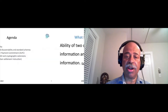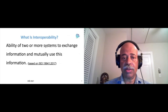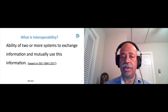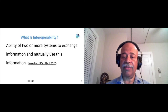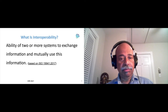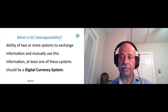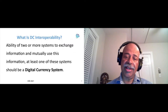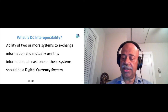I go into interoperability. I just wanted to get a one-sentence answer to this: interoperability is the ability of two or more systems to exchange information and mutually use that information. It's based on ISO 19941:2017. In this talk, I'm specifically focusing on digital currency interoperability, so the key change is that at least one of the systems should be a digital currency system.